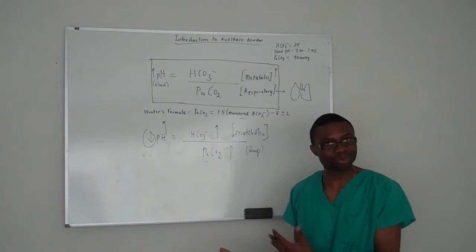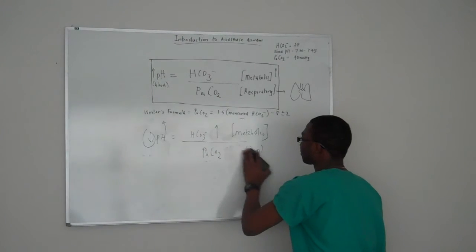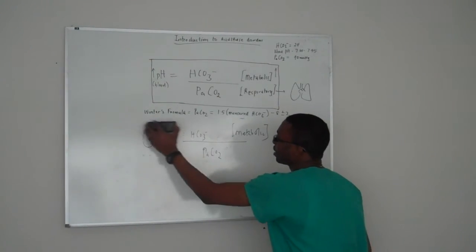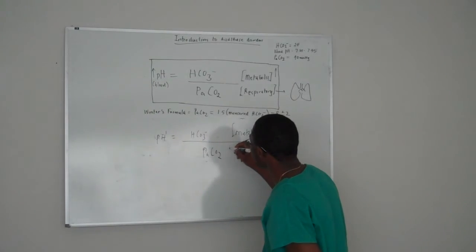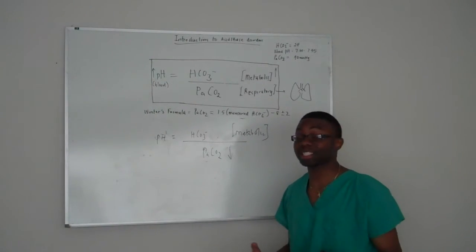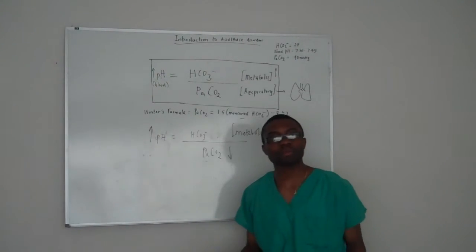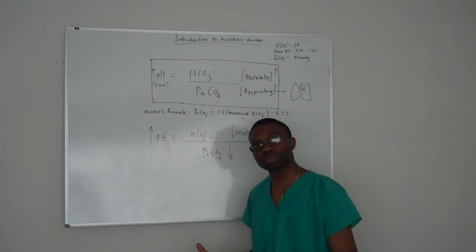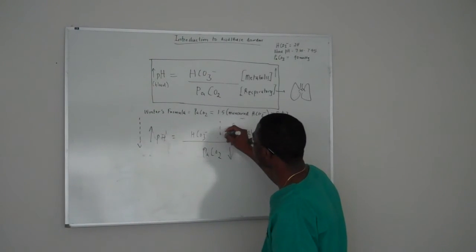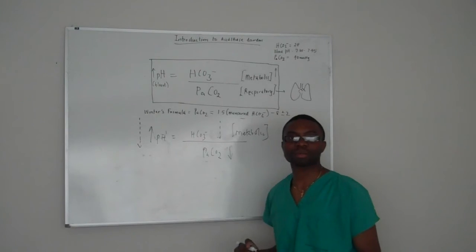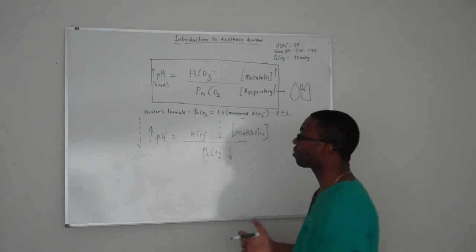Let's play with another line. So let's assume PCO2 goes down, that's your primary problem. pH is gonna go up. We don't want the blood pH to be up guys, we want it to be low. The only way we can bring it back down is to do what? Lose bicarb. That's the only way. The other one you have to gain more bicarb so you can bring the pH back up.